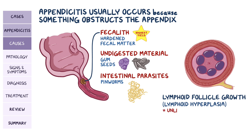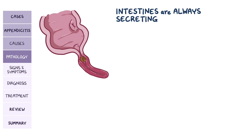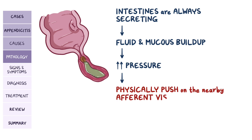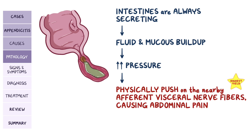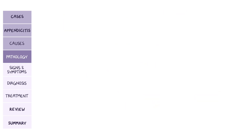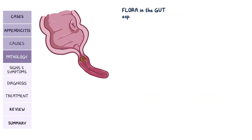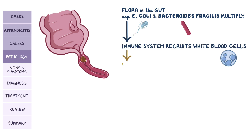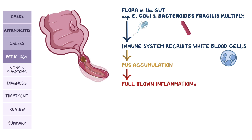A high-yield fact is that unlike a fecalith, lymphoid hyperplasia is more common in children. Because the intestinal lumen is always secreting mucus and fluids from its mucosa, fluid and mucus build up in the obstructed appendix, which increases the pressure inside. This makes it grow in size, and it will physically push on the nearby afferent visceral nerve fibers, causing abdominal pain. The flora and bacteria in the gut, usually E. coli and Bacteroides fragilis, will multiply in the appendix. This triggers the immune system to recruit white blood cells and pus starts to accumulate, resulting in full-blown inflammation of the appendix.